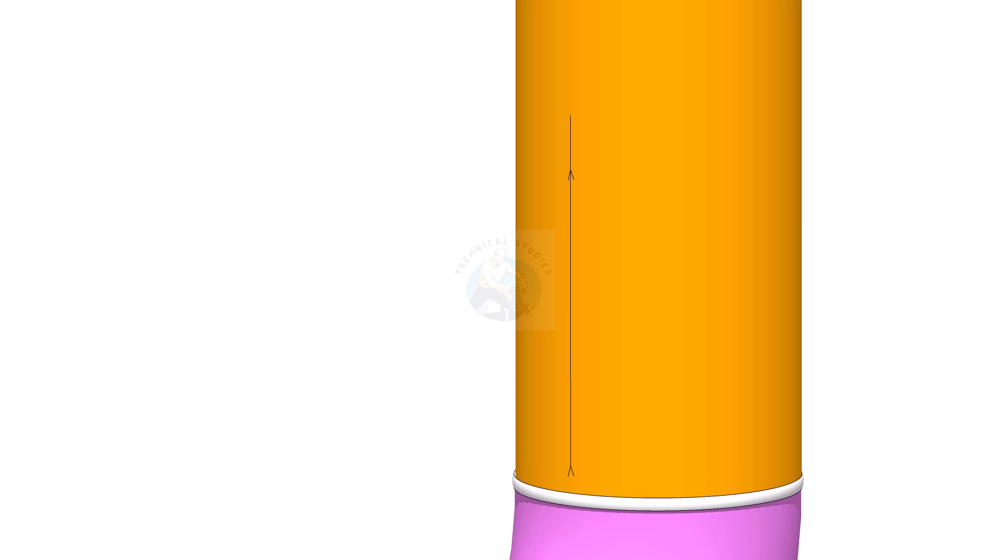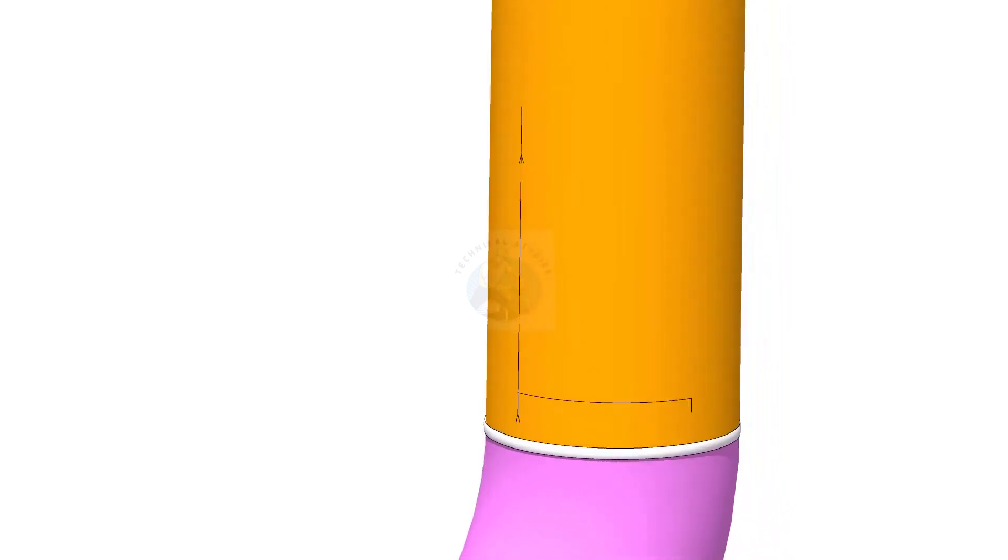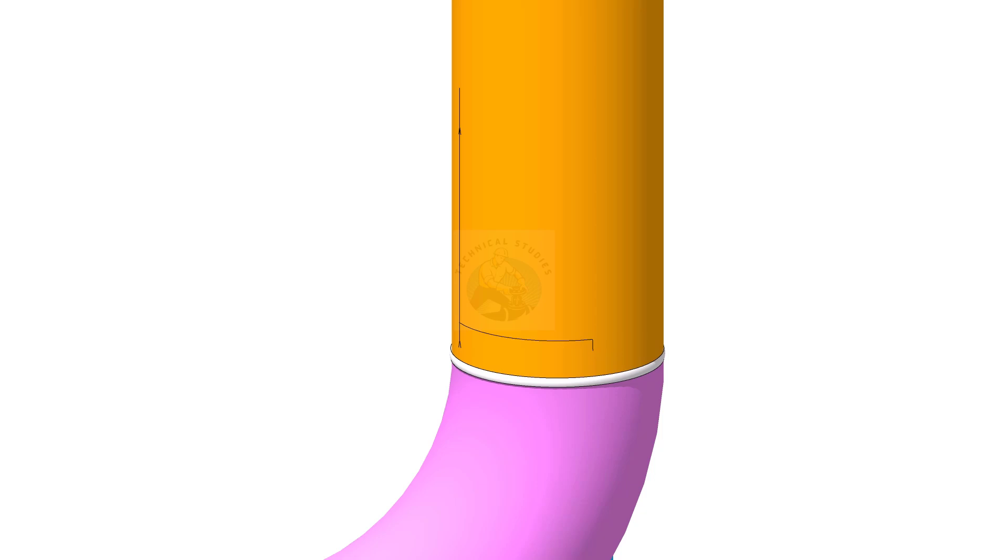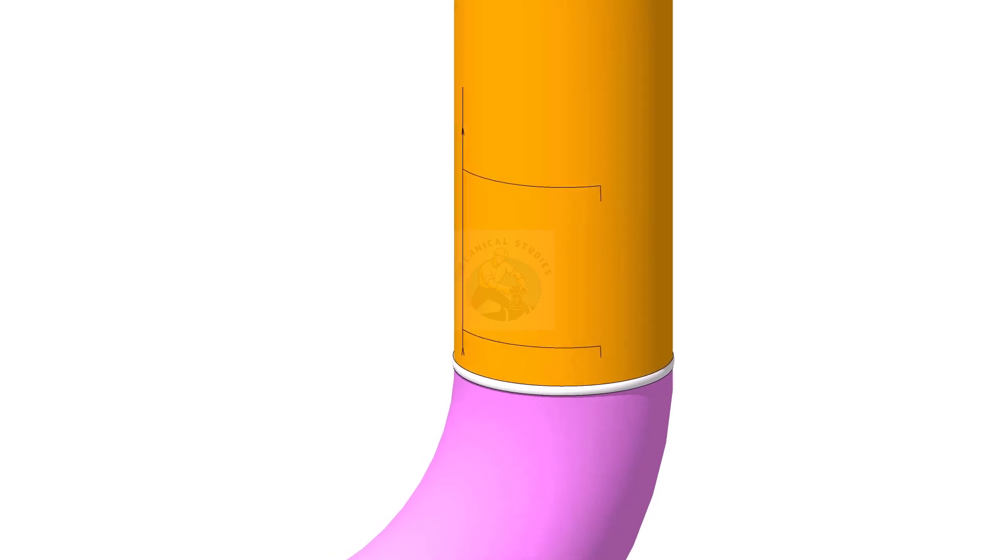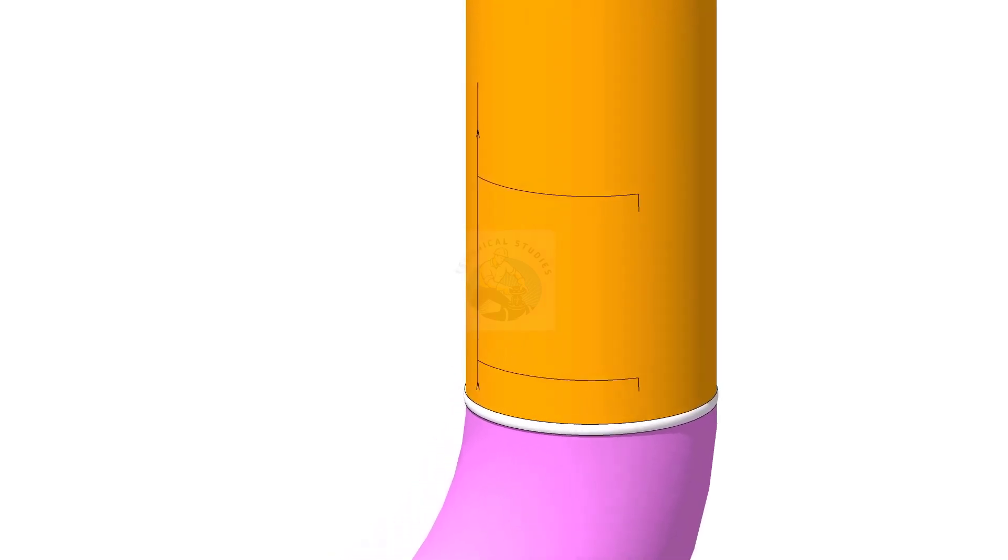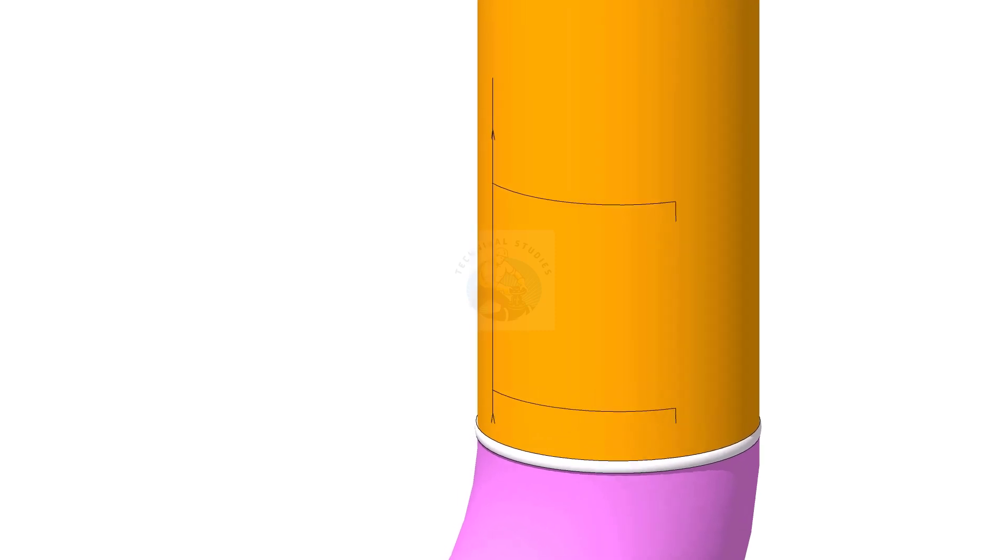Mark 254 mm on the vertical pipe, as shown. Draw the vertical center line of the nozzle.